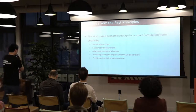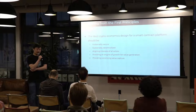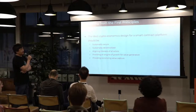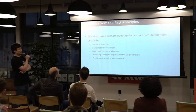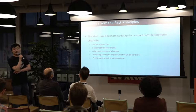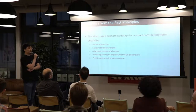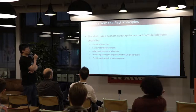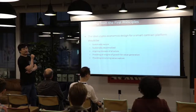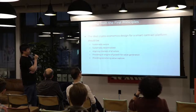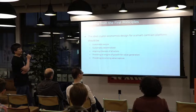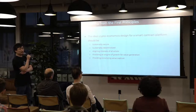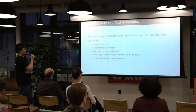We started designing this economic model starting last September/October, and it took us about three months to finally come up with what we have today. In the beginning it felt very open — there are a lot of directions you can go. It's not very useful to dive into the specifics immediately, but to really step back and think about what an ideal crypto-economics model design for a smart contract platform should be. So we started from some design goals.